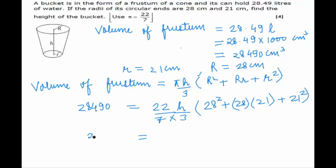This simplifies to 28,490 equals 22h/21 times 181. Therefore, h equals 28,490 times 21 divided by 22 times 181, which gives h equal to 15 centimeters. This is the solution to our problem.